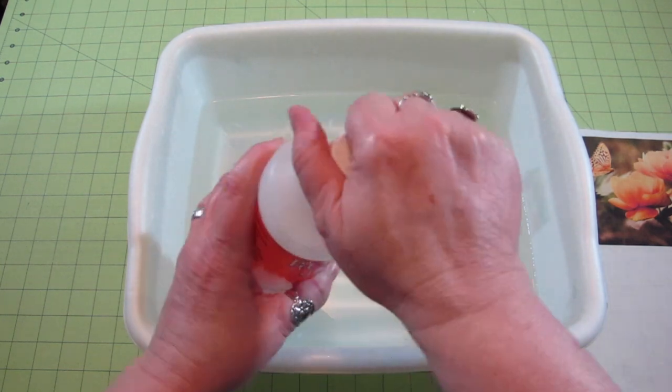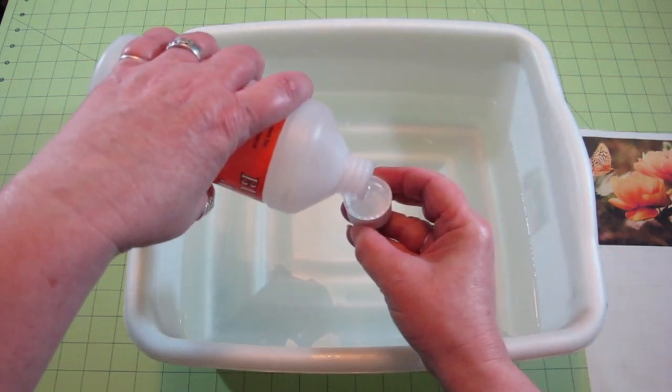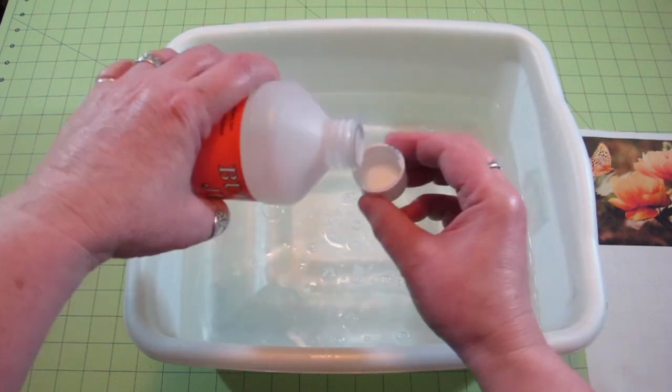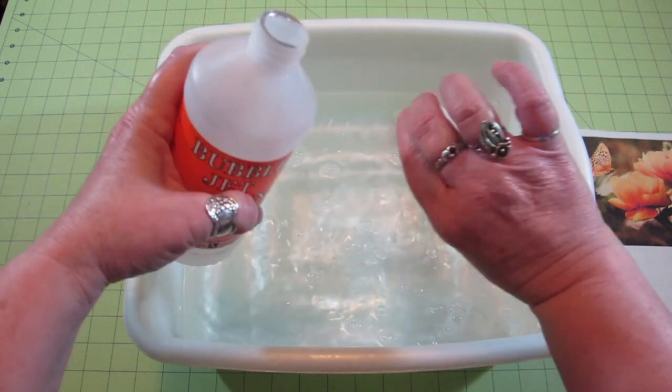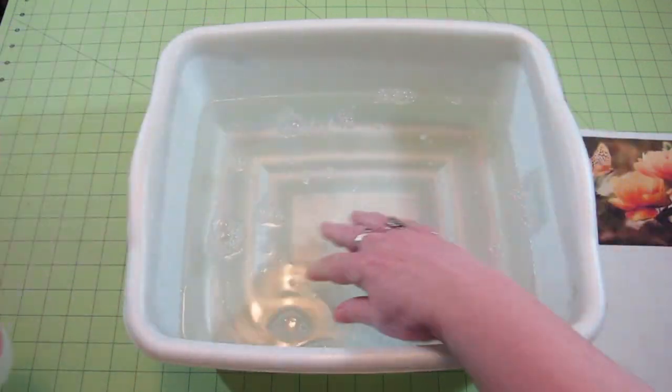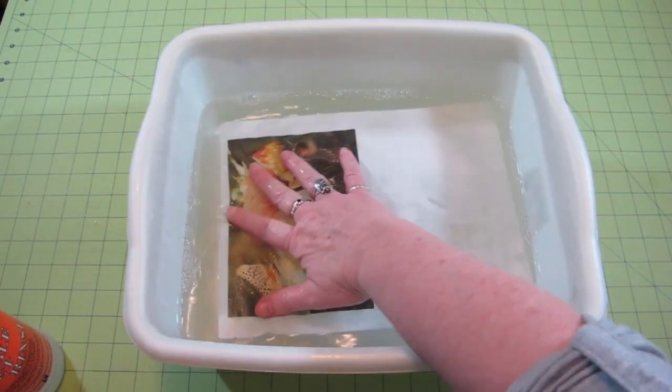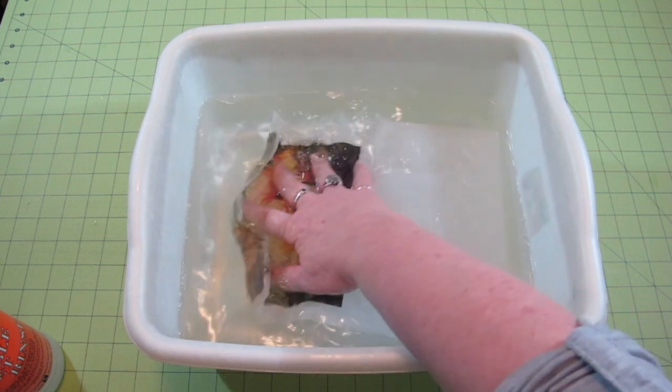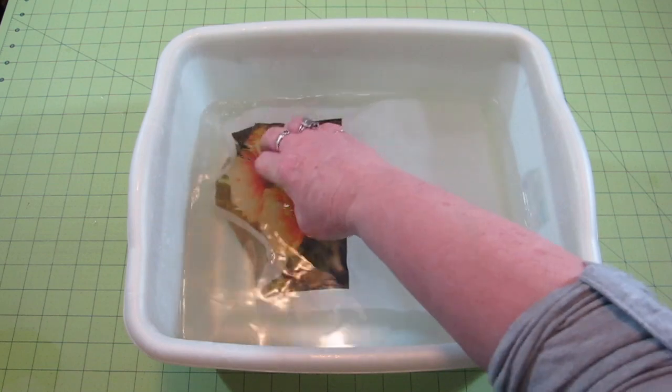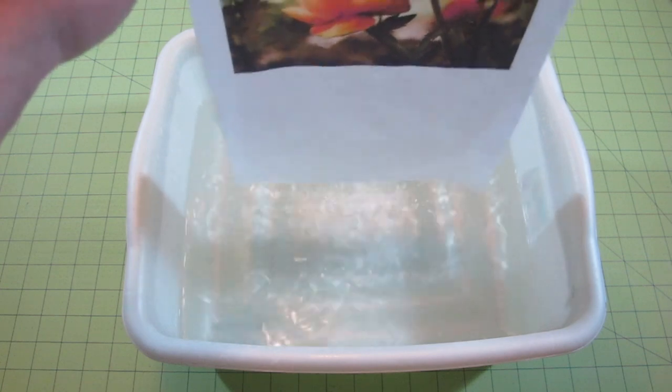To rinse your fabric print using bubble jet rinse, fill a container with one gallon of water and add 4 capfuls of the rinse. Dip only one sheet at a time into the rinse water, so any excess ink won't bleed onto the other prints or cause streaks and discolorations. Gently swish the fabric around in the rinse water for 2-3 minutes continuously.